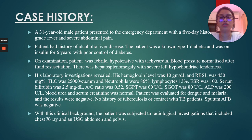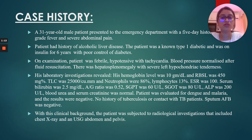Case History. A 31-year-old male patient presented to the emergency department with a 5-day history of high-grade fever and severe abdominal pain. The patient had a history of alcoholic liver disease and was a known type 1 diabetic on insulin for 6 years with poor control of diabetes. On examination, the patient was febrile and hypotensive with tachycardia. Blood pressure normalized after fluid resuscitation. On per-abdominal examination, there was hepatosplenomegaly with severe left hypochondriac tenderness.